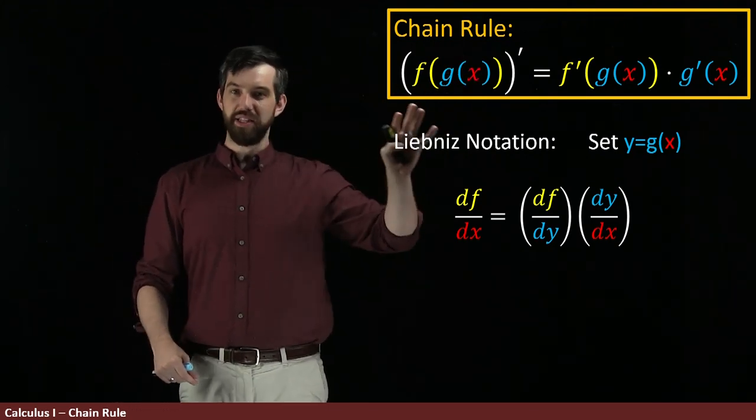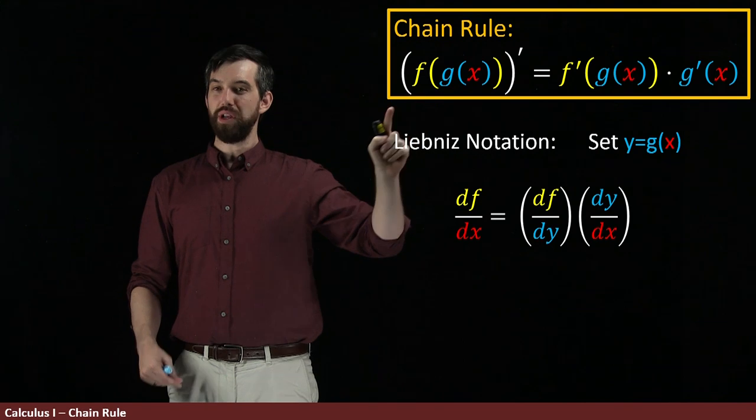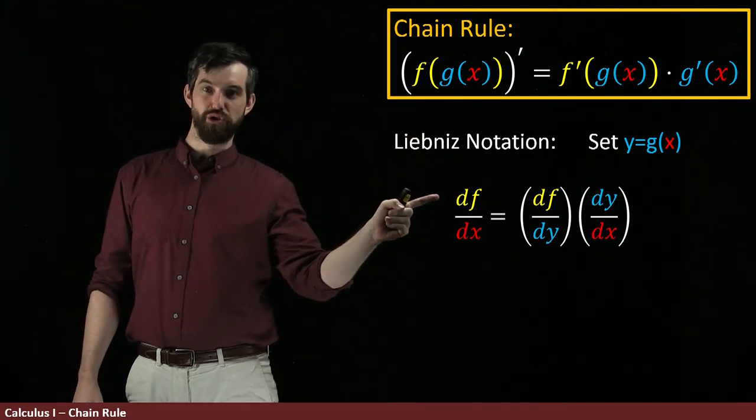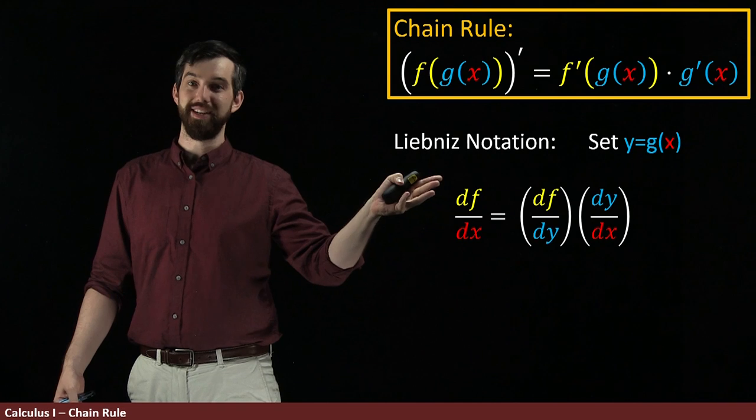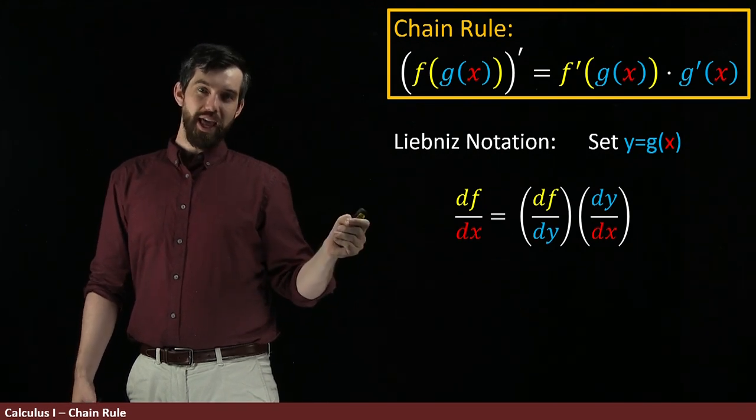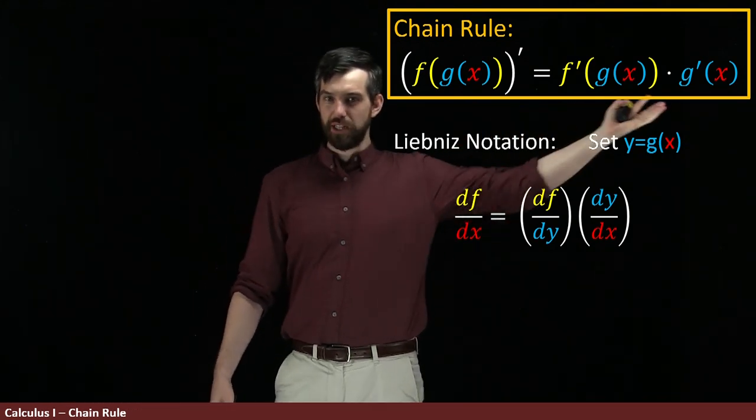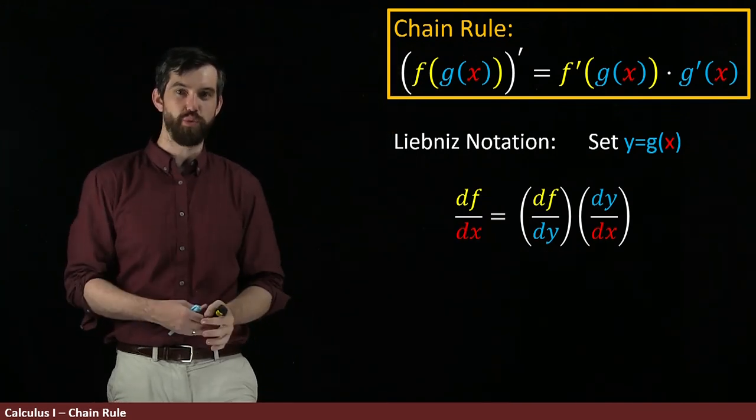And then we can translate this entire thing: the derivative of the composition is the derivative of this function f with respect to the variable, derivative of df/dx. And then since the chain rule is the product of two things, in Leibniz notation we get a product of two things as well.